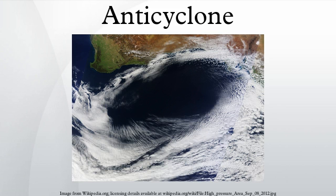On weather maps, these areas show converging winds, also known as confluence, or converging height lines near or above the level of non-divergence, which is near the 500 hectopascals pressure surface about midway up the troposphere. Because they weaken with height, these high-pressure systems are cold.